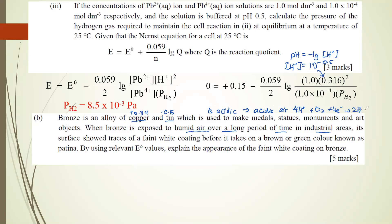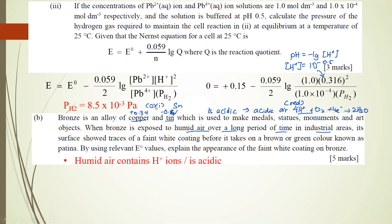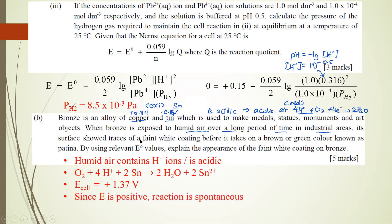Since the acidic air undergoes reduction, we need something that undergoes oxidation. Tin has a more negative E° value (−0.14 V), so tin is more readily oxidized compared to copper. We compare tin with the acidic air. To get all five marks: first explain that the humid air is acidic; then choose the suitable half equations; and finally calculate the E°cell.